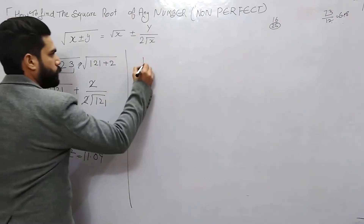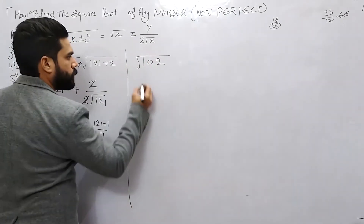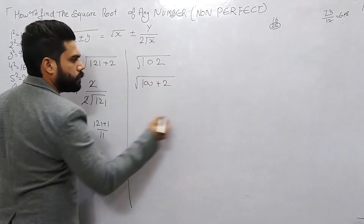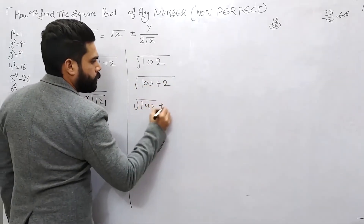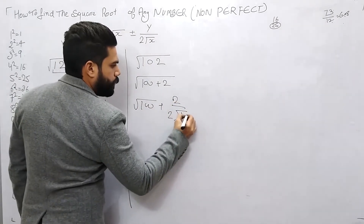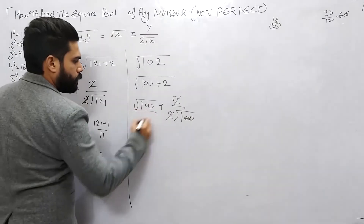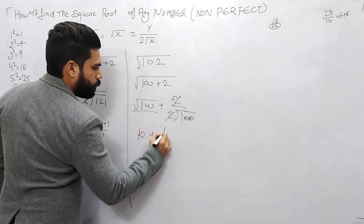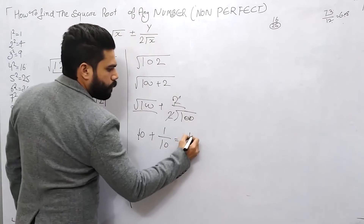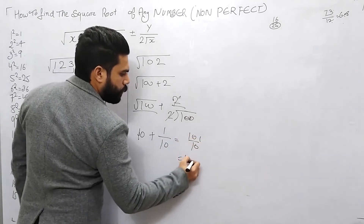Next example: √102. The closest perfect square is 100. We write 100 plus 2. Applying the formula: root 100 plus 2 over 2 root 100. Root 100 is 10. So 10 plus 1 over 10 — the answer is 10.09.